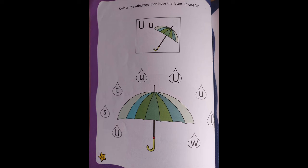as you can see in this picture, there is an umbrella and there are some raindrops. And in each raindrop, there is one letter written. What you have to do is you have to read the letter carefully and see where there is small u written, in which raindrop there is small u and which raindrop there is capital U. And you are going to color that raindrop.